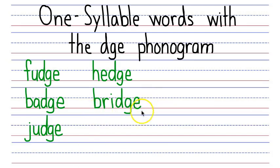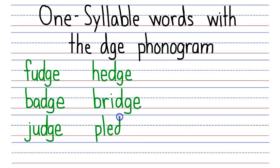And last we have pledge. Pledge starts with a P that says P, then an L that says L, then the E that makes the short E sound, and then the DGE phonogram that says J. P, L, E, J — say it fast: pledge.